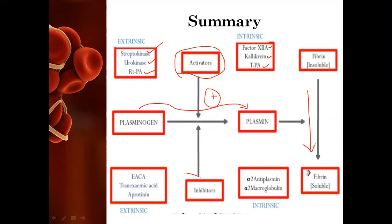At the same time, there are inhibitors which work against the conversion of plasminogen to plasmin. Certain factors will not allow plasmin to be activated — those are epsilon-aminocaproic acid (EACA), tranexamic acid, and aprotinin, which are the antifibrinolytic agents. Also, alpha-2 antiplasmin and alpha-2 macroglobulin bind with the plasmin so that it remains inactivated, blocking the conversion of insoluble fibrin to soluble fibrin and preventing dissolution of the clot. This is the overall summary of fibrinolysis and its intrinsic and extrinsic factors.